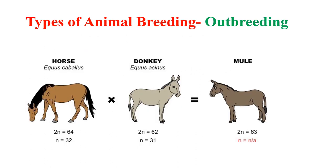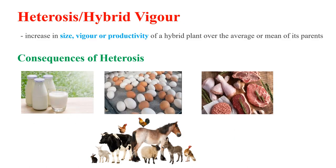The second type of animal breeding is called outbreeding. It is the breeding of unrelated animals, and the offspring developed are called hybrids. The hybrids are stronger and more vigorous than their parents. An example of outbreeding is shown in this picture — a cross between a horse and a donkey resulted in the development of a mule. Mule is superior to horse in strength, intelligence, and disease resistance. The superiority of the hybrid obtained by outbreeding is called heterosis or hybrid vigour.